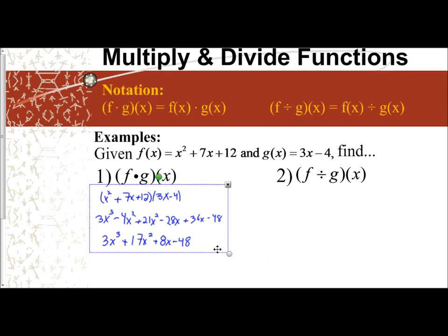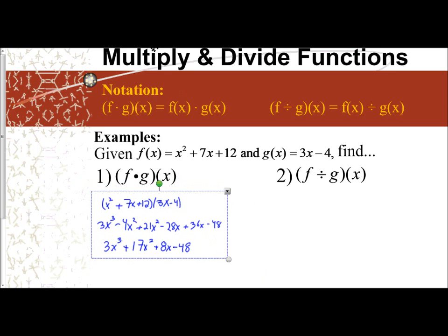Dividing two functions, f divided by g of x, is very simple. We're not going to go into the depth of doing long division or synthetic division. If I'm giving you f divided by g of x, what I want you to do is just put the two functions in a fraction. So I'm going to take f, which is x squared plus 7x plus 12, and I'm going to divide by 3x minus 4. Just write it out. We're not going to go into the long division process. We're just going to write them together as a fraction.